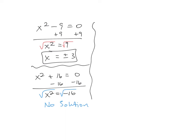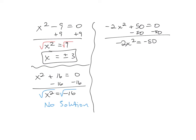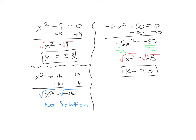Here's something that can happen: you might subtract 50 and think, oh, it's negative — no solution. But keep going. Negative negative is positive, so now you can do the square root because it's a positive number. You've got to get x squared by itself first, then if it's negative, it's no solution.